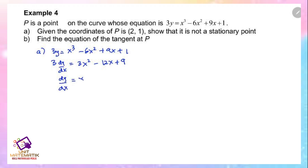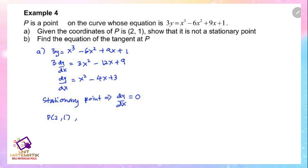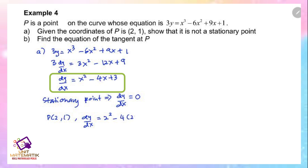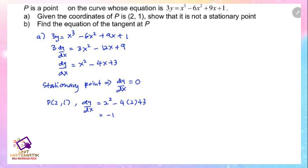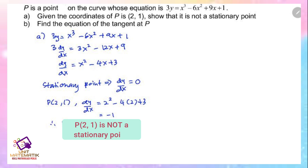Dividing all terms by 3 gives dy/dx equals x squared minus 4x plus 3. To find a stationary point, the derivative must equal 0. But since the point (2, 1) is already given, we substitute to find dy/dx: 2 squared minus 4 times 2 plus 3 equals negative 1. Since dy/dx is not equal to 0, therefore P (2, 1) is not a stationary point — at a stationary point the value of dy/dx must be 0.